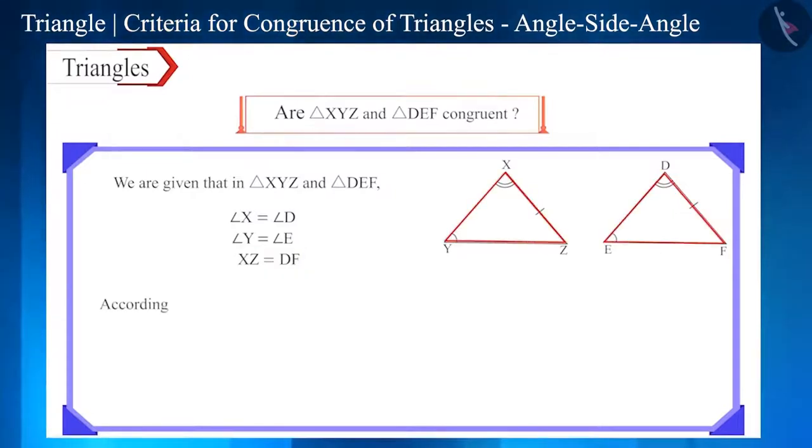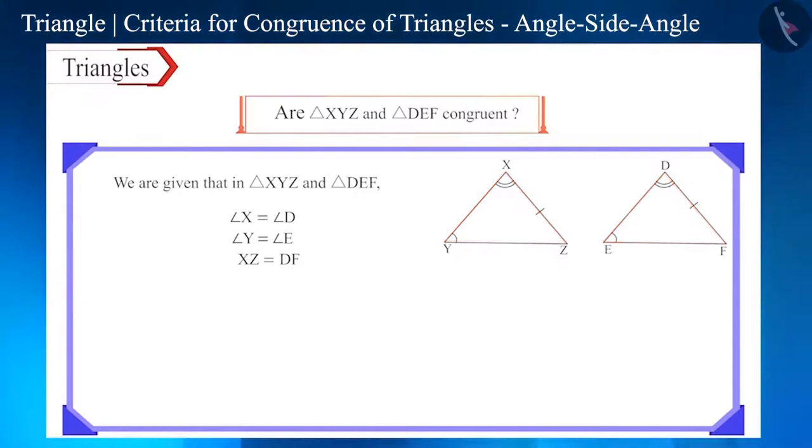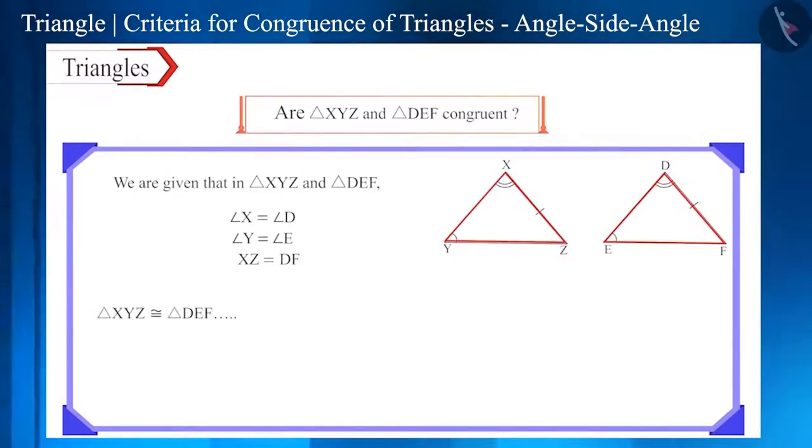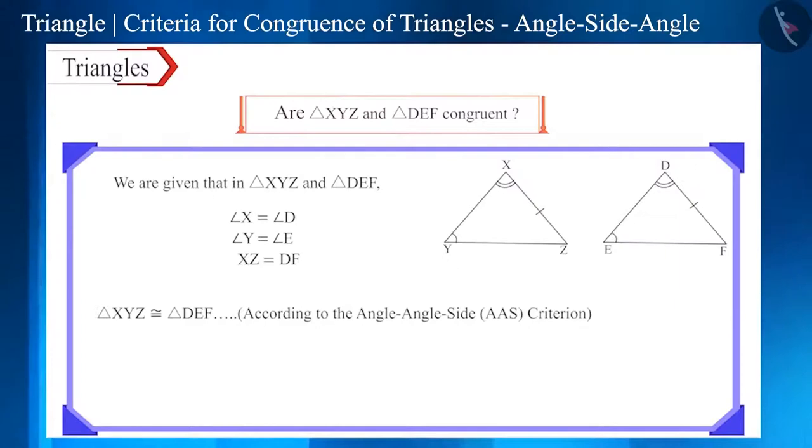Therefore, this triangle is not congruent according to the ASA congruence rule for triangles. But these two triangles are congruent according to another congruence rule. We will discuss about this criterion in detail in our next video.